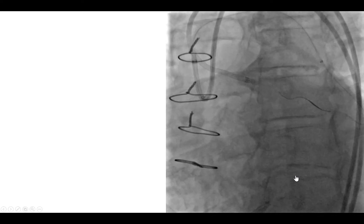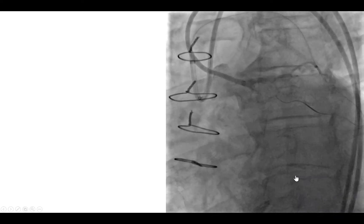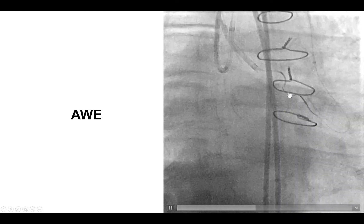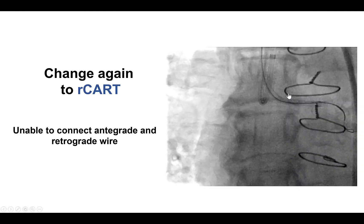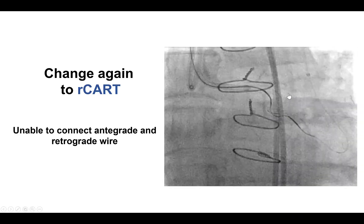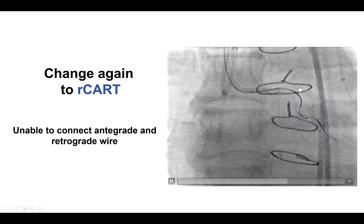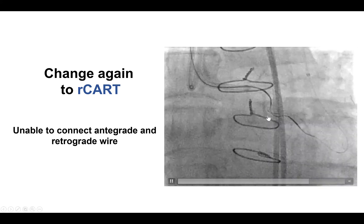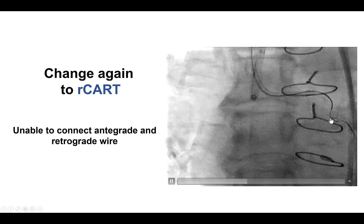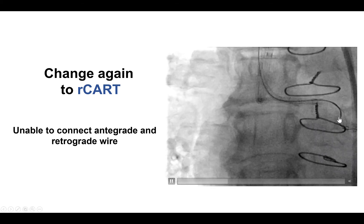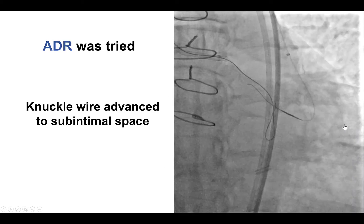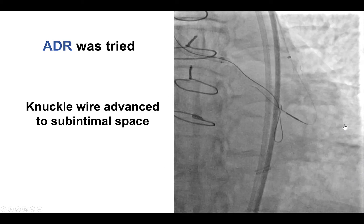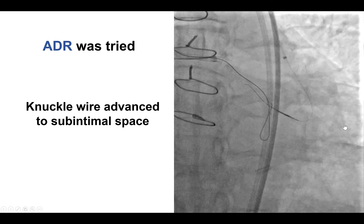The retrograde wire did go once again into the subintimal space. We inserted an antegrade guide wire, and now we did have a relatively close proximity of antegrade and retrograde guide wires. However, we did know from the previously done CT angiogram that there was significant calcification at this zone, and it was extremely challenging to make progress. We could not make the antegrade and retrograde guide wires meet despite trying balloon inflation on multiple occasions.